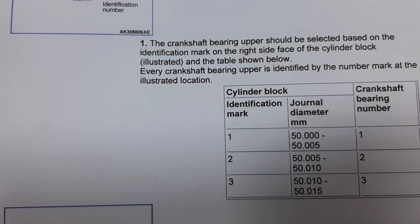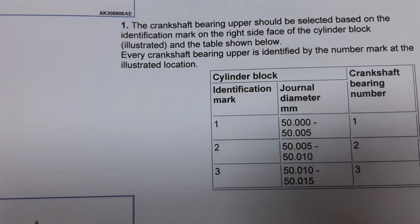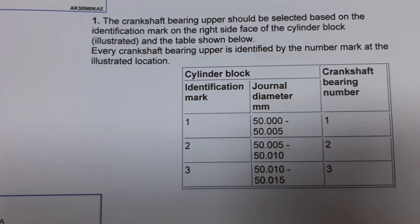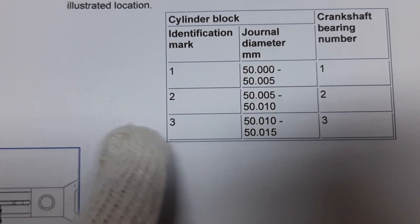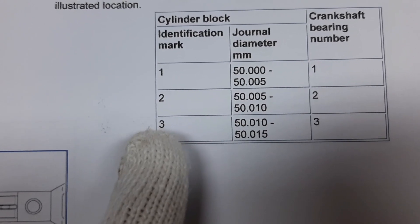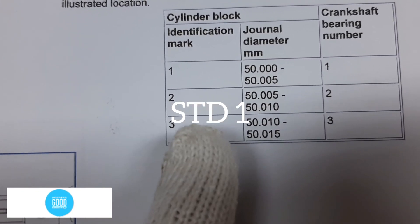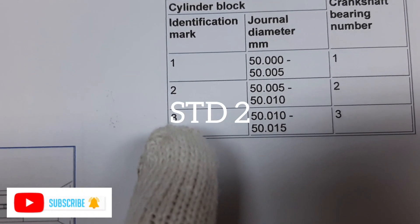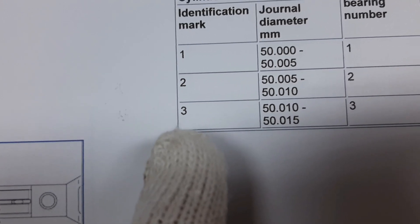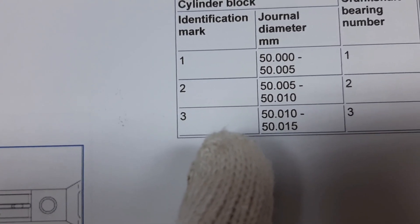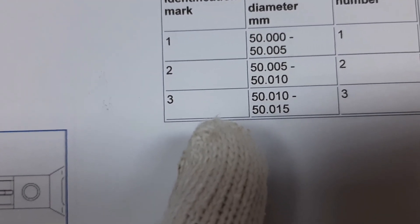The crankshaft bearing upper should be selected based on the identification mark on the right side face of the cylinder block, as illustrated in the table. Every crankshaft bearing upper is identified by a number mark. Cylinder block identification marks: 1 — journal diameter 50.000 to 50.005 mm; 2 — journal diameter 50.000 to 50.010 mm; 3 — journal diameter 50.010 to 50.015 mm.